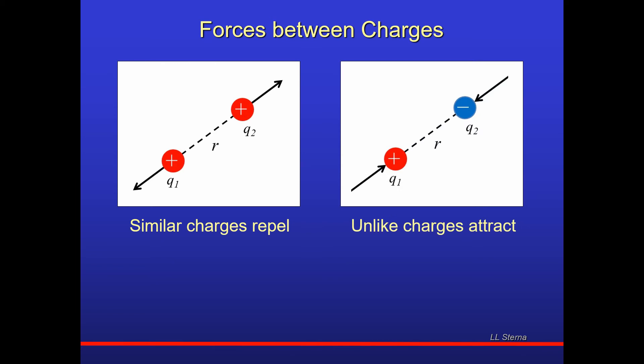If we had two unlike charges, positive and a negative for q1 and q2, again, we have two forces. Each charge exerts a force on the other charge, an attractive force. So, the positive charge experiences a force in one direction, the negative a force in the opposite direction.